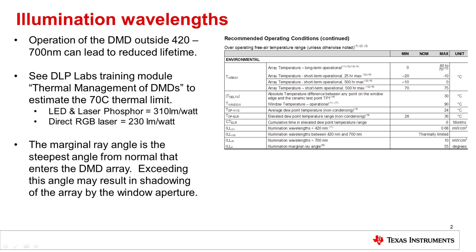DLP also has specific DMDs that use illumination sources in the ultraviolet, or UV, and near-infrared, or NIR, range. It is important to note that different light sources have unique thermal loads for a given lumens value.